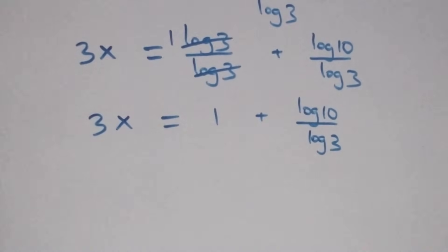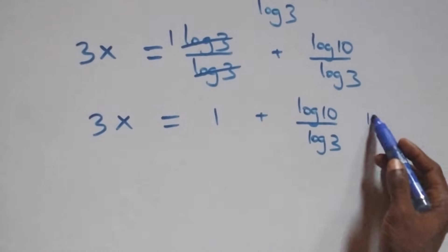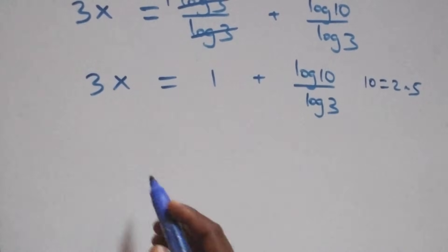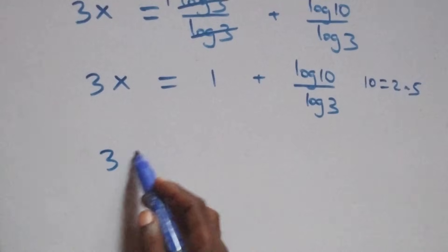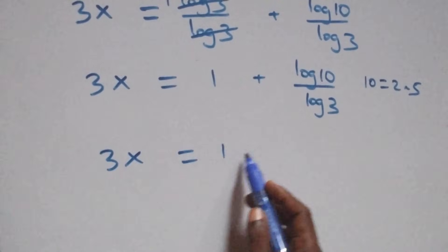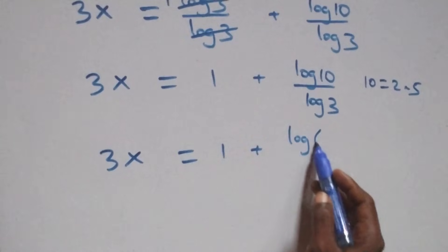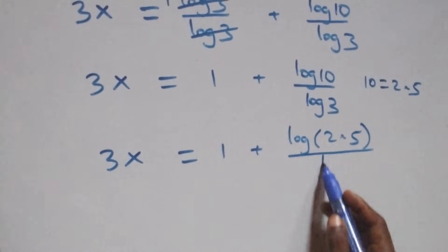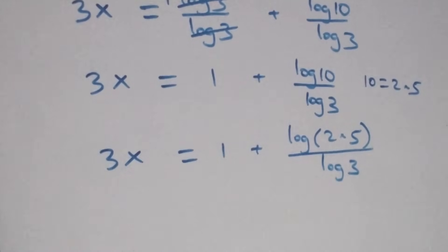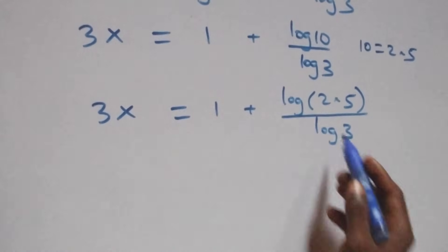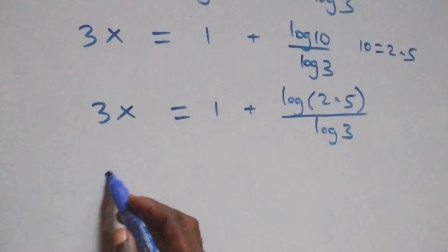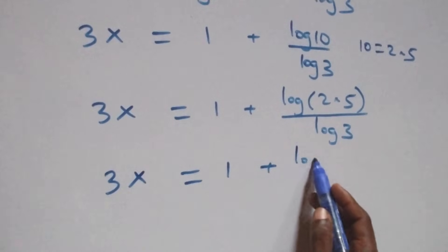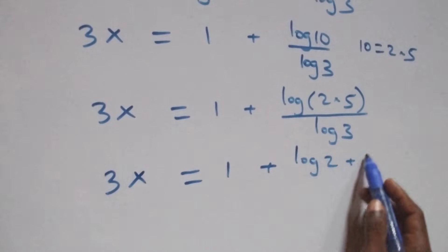Also, from here we can write 10 as 2 times 5. Then what we have becomes 3x equals 1 plus log of 2 times 5 over log 3. This follows the log product rule, giving 3x equals 1 plus log 2 plus log 5 over log 3.